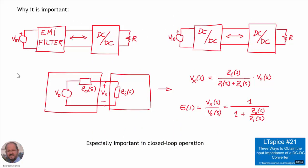In the previous video, we talked about the importance of the input impedance of a DC-DC converter because we usually are going to employ EMI filters before the DC-DC converter or another DC-DC converter in cascade. Therefore, we are going to have an interaction between these different blocks. We can study this interaction using an equivalent circuit from which we can obtain a transfer function that relates the voltage at the interface of both blocks with the voltage applied by the first stage. We also said that this is especially important in closed loop operation.